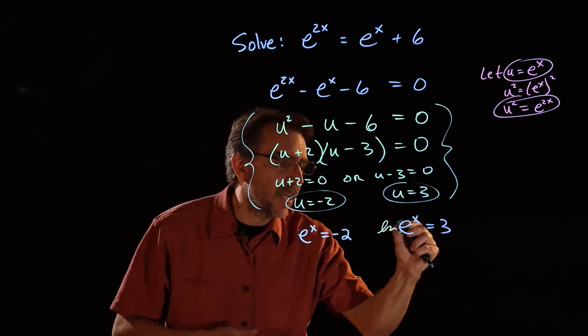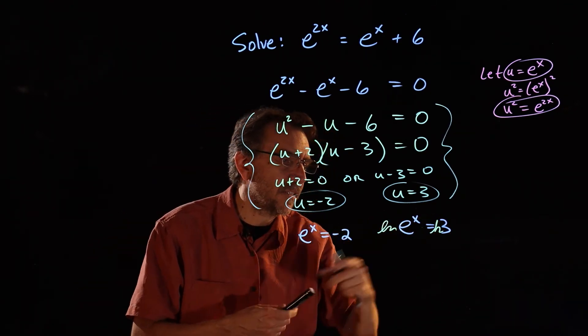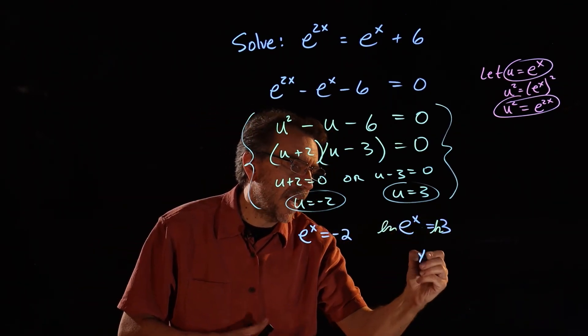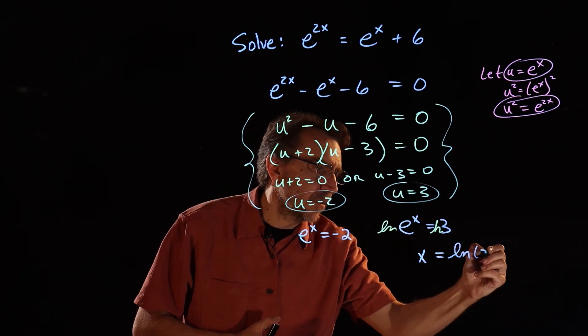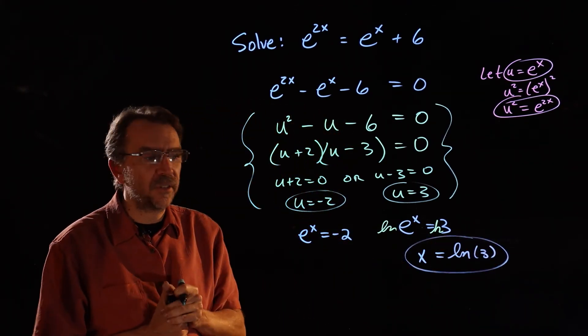So to solve these, certainly I would take the natural log of both sides. And natural log of e to the x is x equals natural log of 3. So there's one solution to the original.